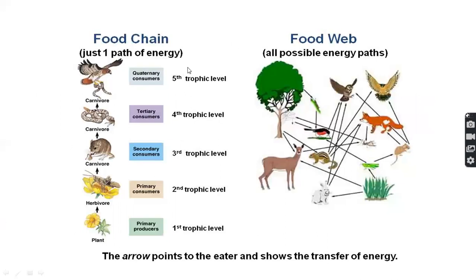Let's look at a picture example. Plants are the first trophic level — they are producers. A rat eats the plants — the rat is the primary consumer. A snake eats the rat — the snake is the secondary consumer, or tertiary consumer. An eagle eats the snake — the eagle is the final consumer, at the top of the food chain. Finally, when the eagle dies, it is degraded by decomposers. This linear sequence is called a food chain.